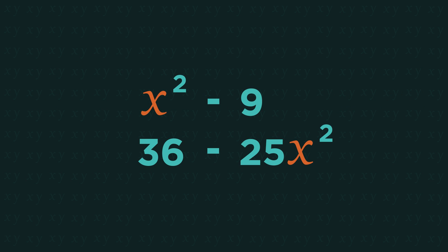So that's the difference of two squares: a squared x squared, a square number, and a minus.